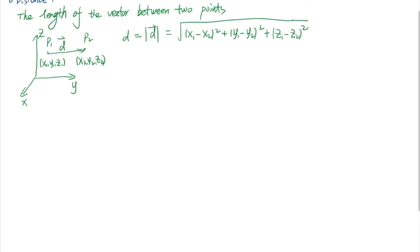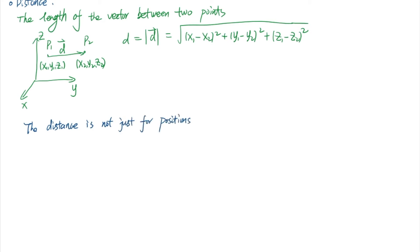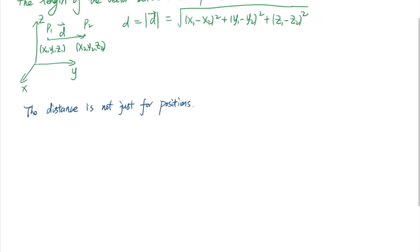But distance is not just for positions. It can also be for other things. For example, for velocities. Consider a 3D space x, y, and z. Again we have two points p1 and p2. Each point has their velocity vector v1 and v2. In this case, we can define their velocity difference dv as v2 minus v1.